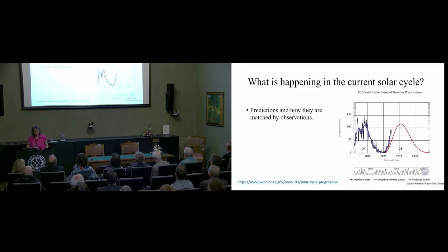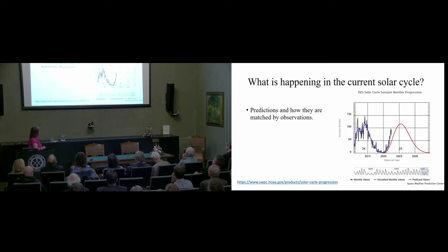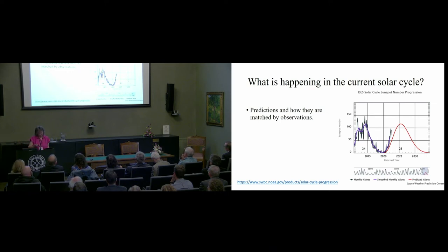What's happening in the current cycle? We have predictions — there's a committee that makes them. The red is their prediction; the blue and black are the real data. We appear to be hitting more activity than was predicted. Remember, the last few cycles they predicted lots of activity and there wasn't very much — so maybe they've adjusted their algorithms too far. You can see the long-term trends. Maybe it'll even peak before they said it would. Solar activity is not just of interest in how it alters oscillations — it's very important for space weather, and that's why a lot of this work is done.